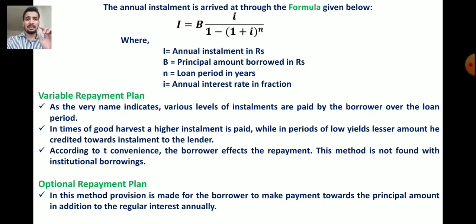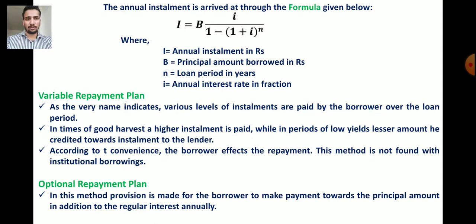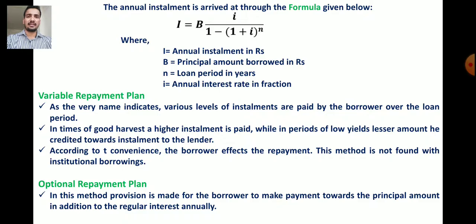The annual installment in the amortized even repayment plan is calculated using the formula: I = B · i / (1 − (1 + i)^−N), where I is the annual installment in rupees, B is the principal amount borrowed in rupees, N is the loan period in years, and i is the annual interest rate as a fraction.